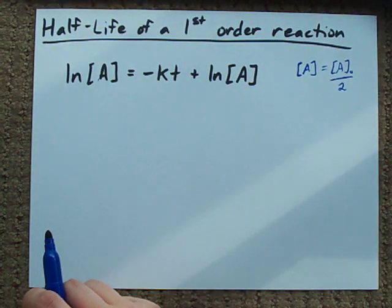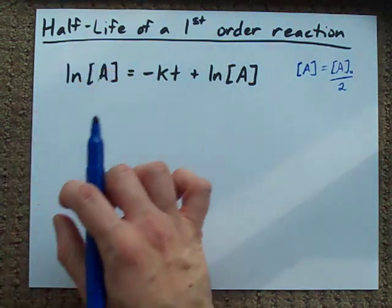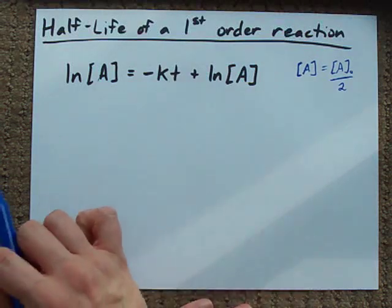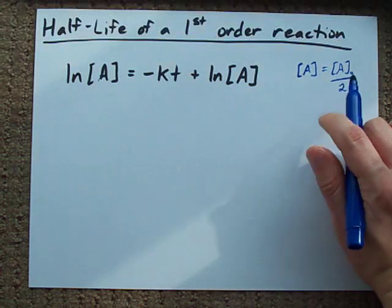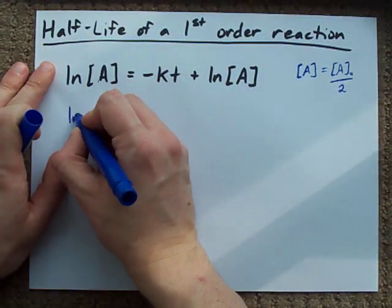So the strategy to find the expression for half-life is to solve for T once you've made the concentration term equal to initial concentration divided by 2. Check it out.